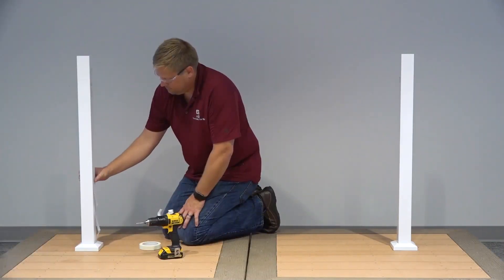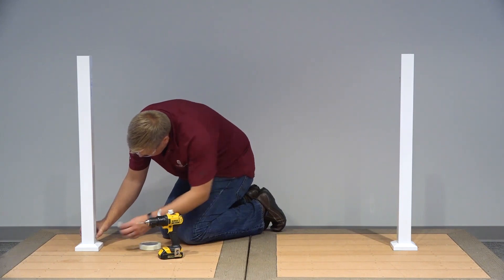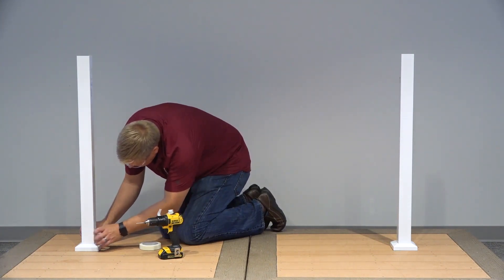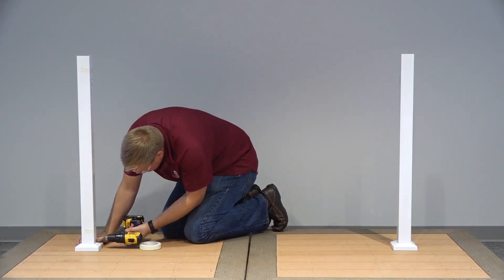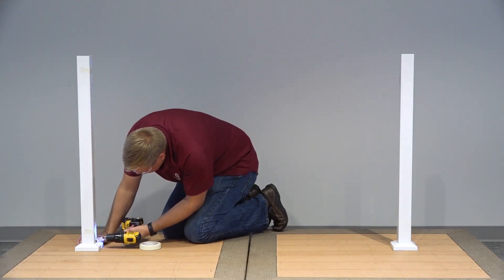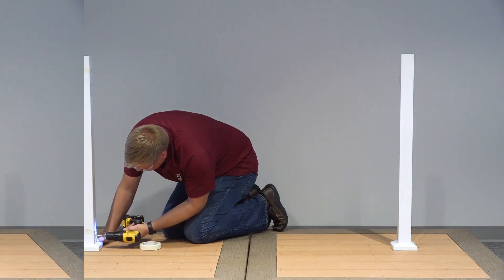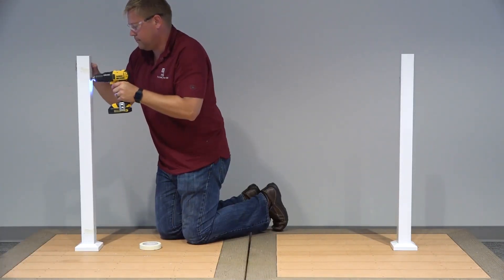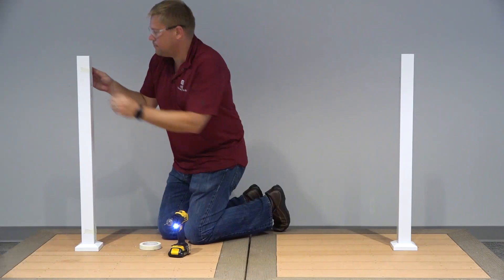Using the paper bracket mounting template included with the brackets, align the base trim with the appropriate guide on template and secure in place with tape. Pre-drill through the desired marked locations on the template using a 1/8 inch drill bit. Remove the template.